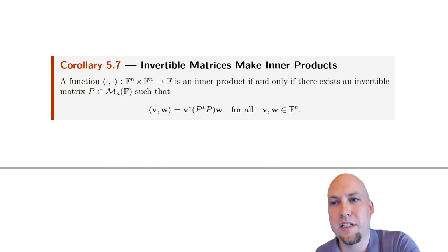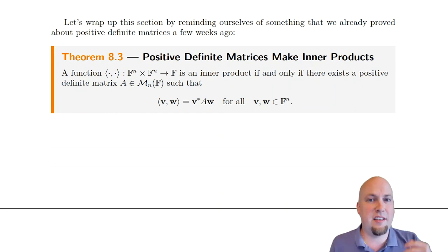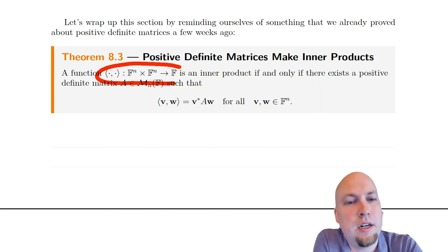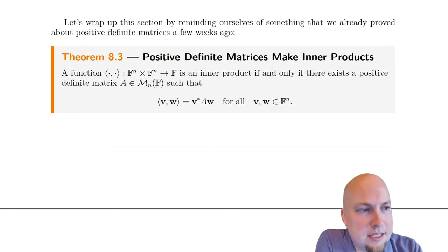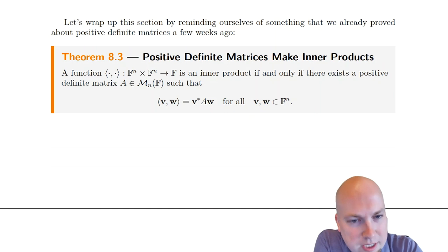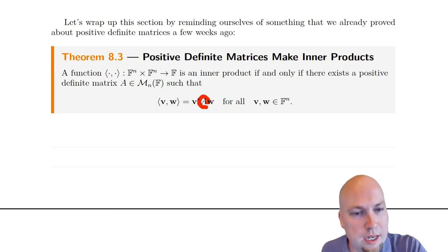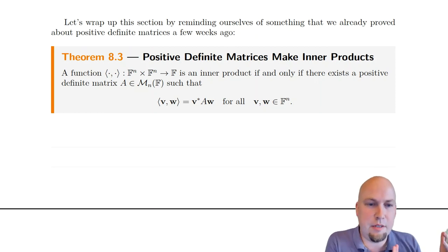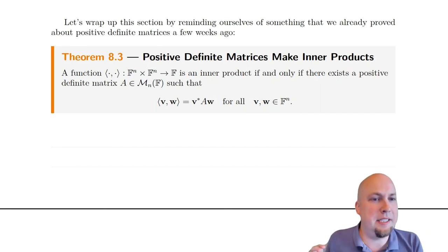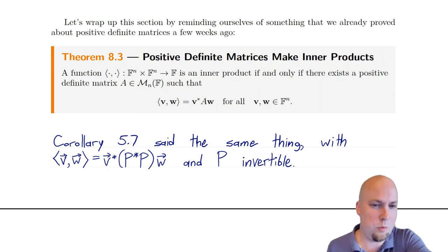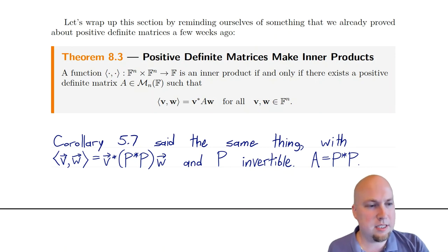So if we rephrase that using our current terminology, we get Theorem 8.3: a function on ℝⁿ or ℂⁿ is an inner product if and only if there exists a positive definite matrix A such that the inner product has the form V*AW. This is just like the usual dot product — which would use the identity matrix, itself positive definite — but in general you can vary things via any positive definite matrix. We don't need a new proof; it follows directly from Corollary 5.7 combined with the fact that positive definite matrices are exactly those writable as P*P with P invertible.